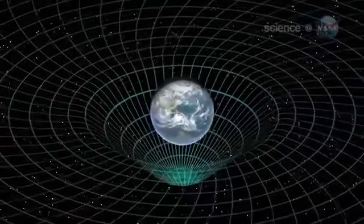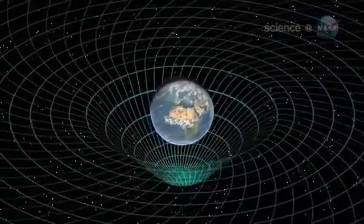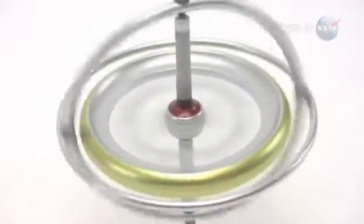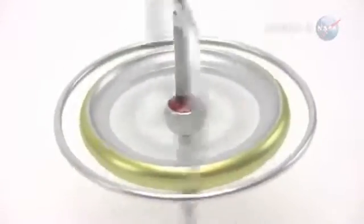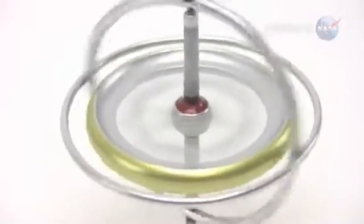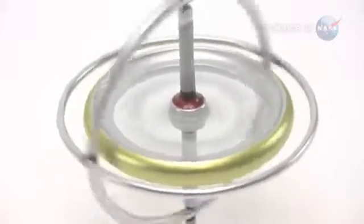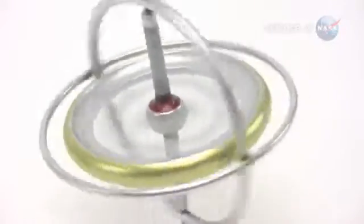This is what Gravity Probe B went into space in 2004 to check. The idea behind the experiment is simple. Imagine trying to spin a toy top on the dimpled surface of that trampoline. It's going to wobble, right? Something similar happens when you try to spin a gyroscope in curved spacetime. Its spin axis will drift, or precess.